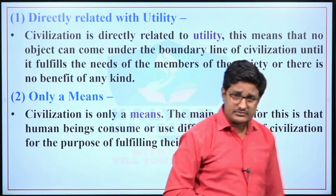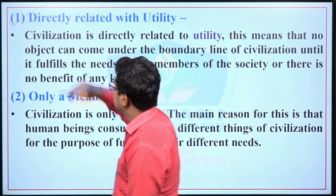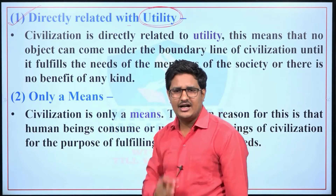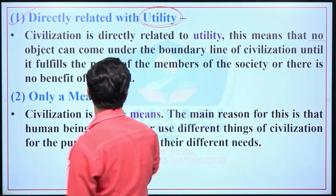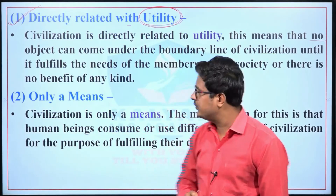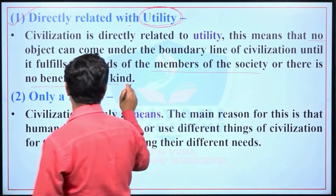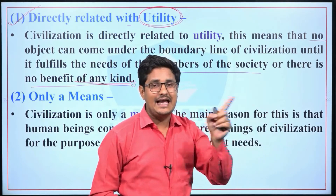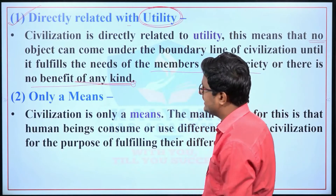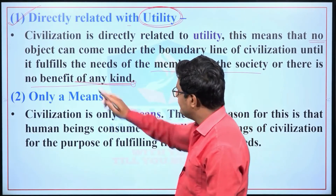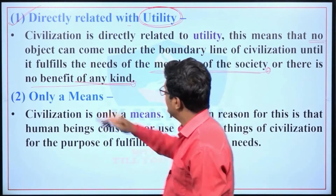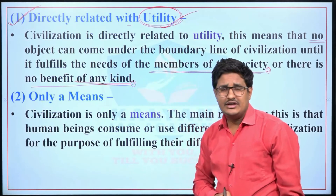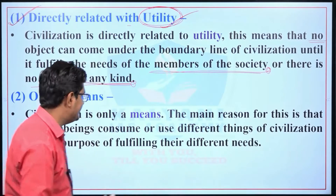First characteristic: civilization is directly related with utility. No object can come under the boundary line of civilization until it fulfills the need of members of society, or there is no benefit of any kind. Every object that comes under civilization has utility. So civilization is directly related with utility.